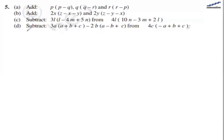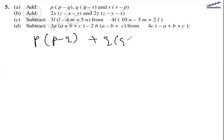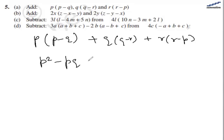In the first part, we need to add the expressions: p(p minus q) plus q(q minus r) plus r(r minus p). Let's first open the brackets and then do the addition.